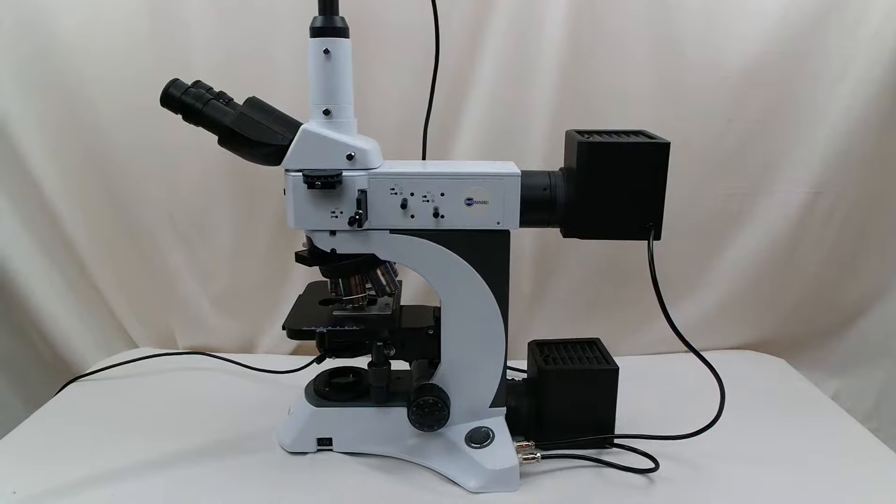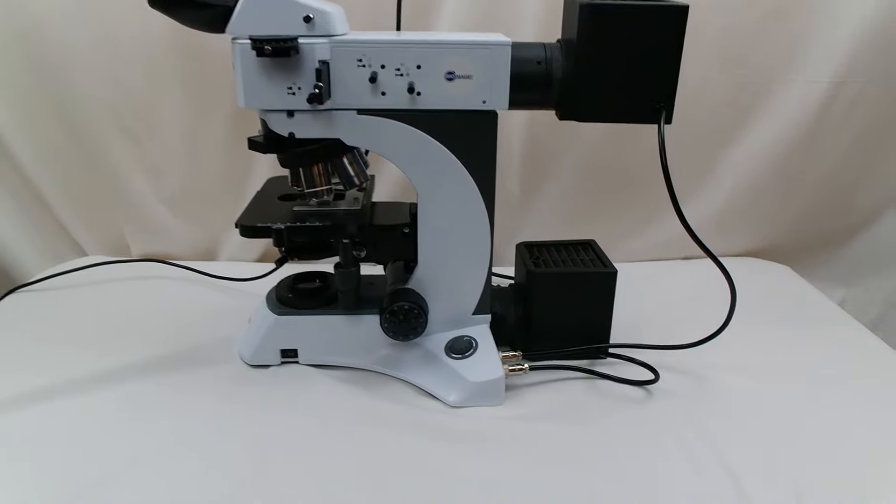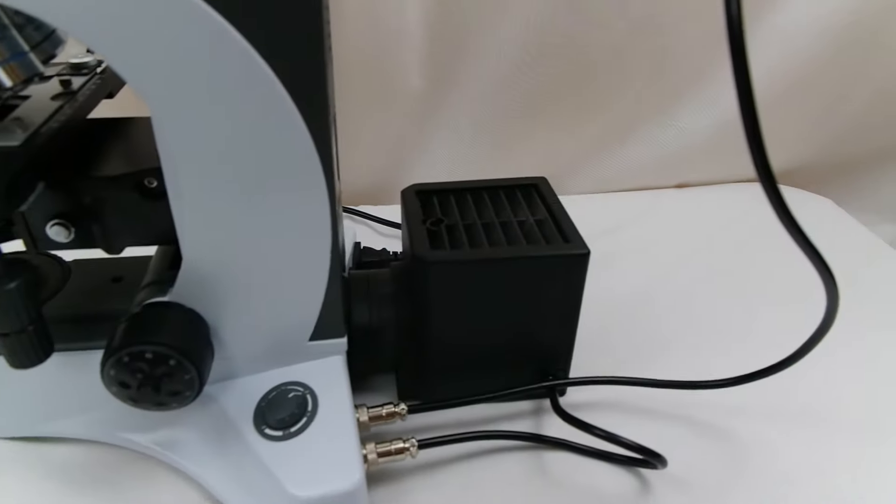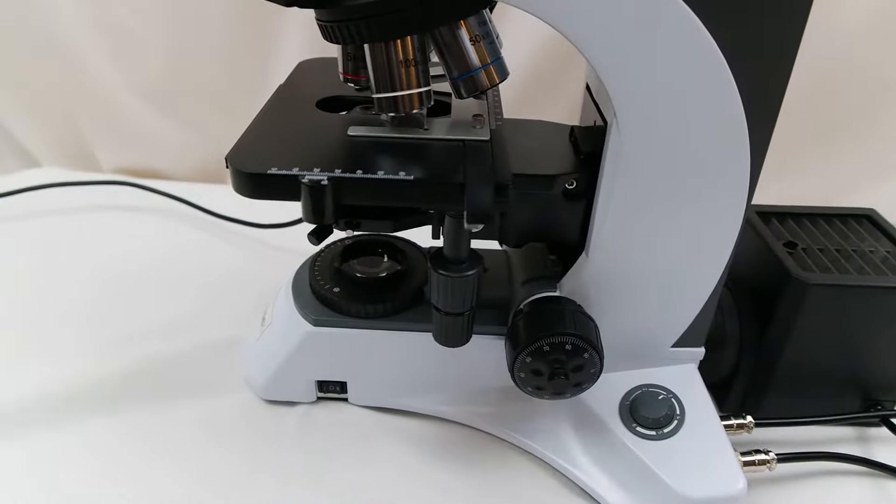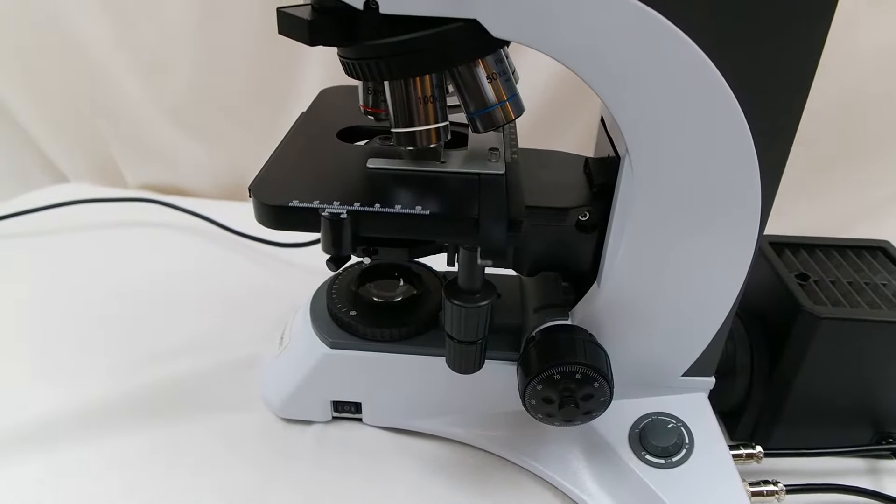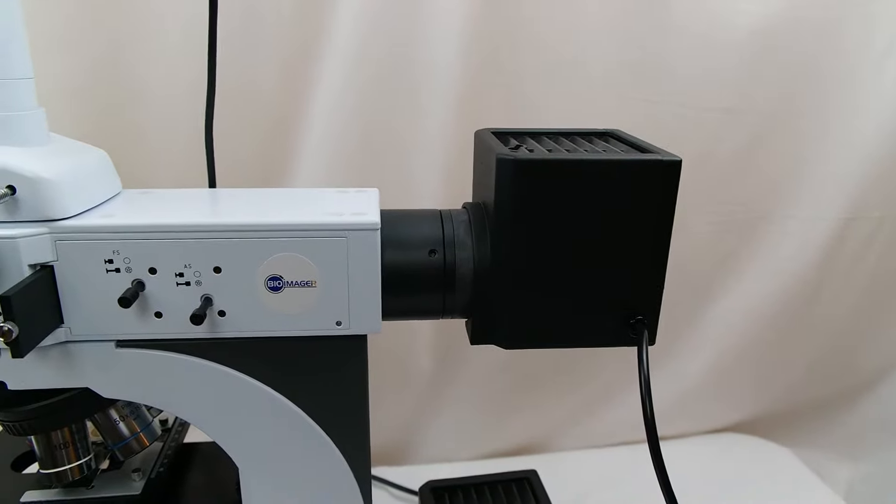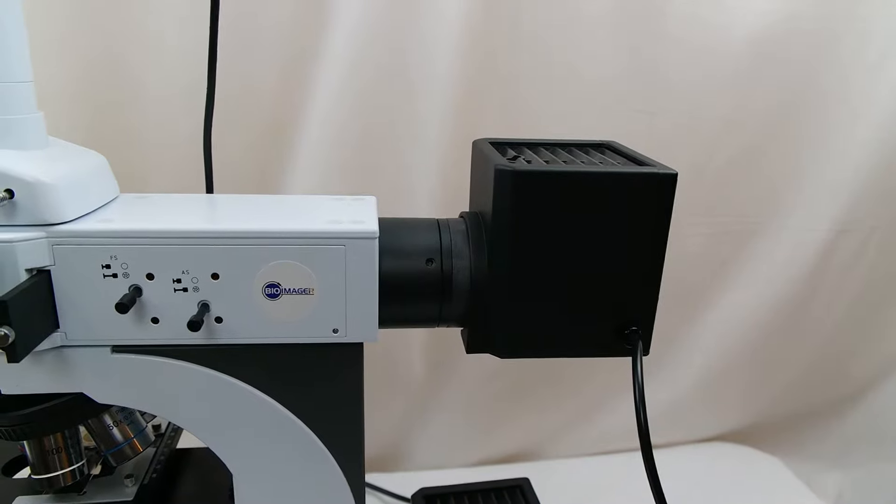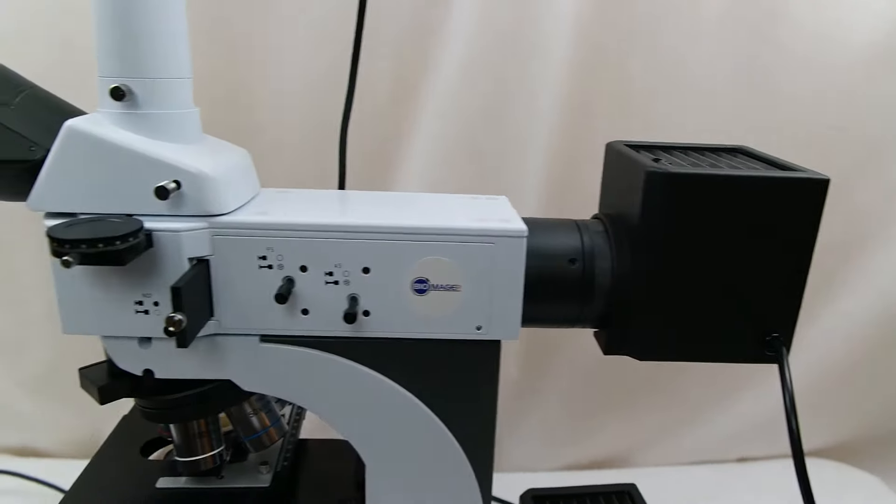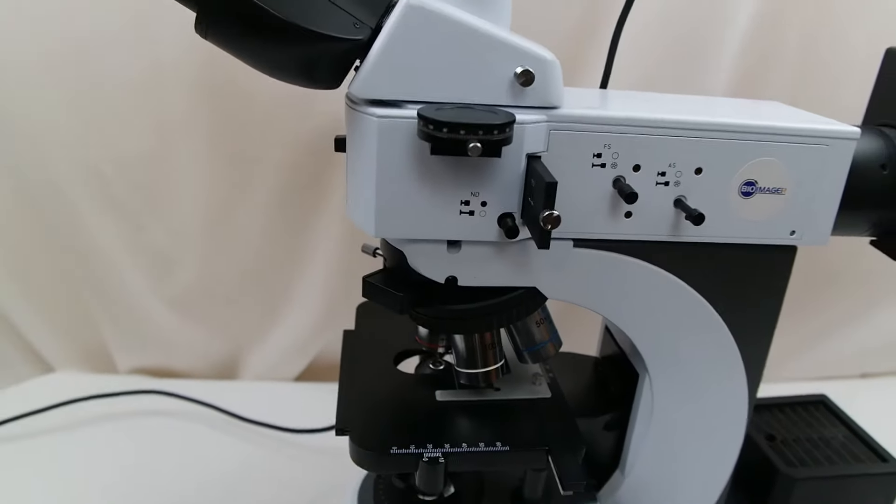This microscope has two light sources. One is at the bottom for transmitted light. This one is 100 watt halogen. This is normally used for transparent samples such as biological samples or any transparent samples. Another one is at the top which is for reflected illumination and this one is also 100 watt halogen. This is used for non-transparent samples or opaque samples.